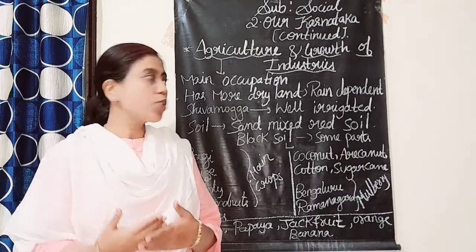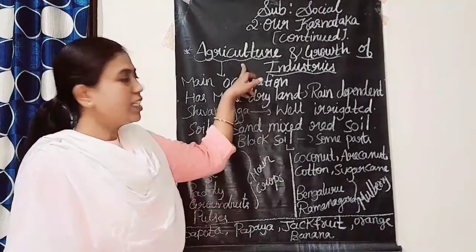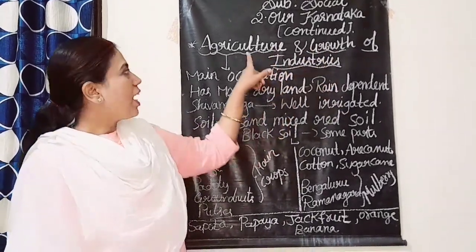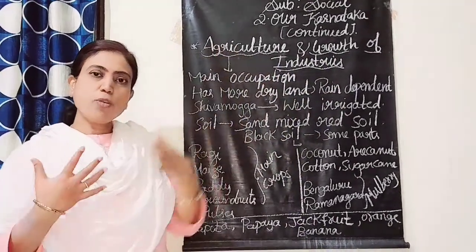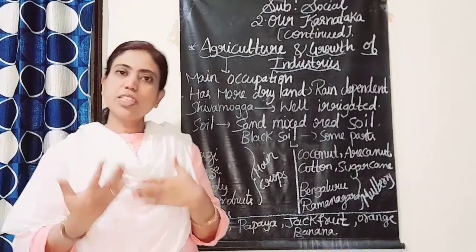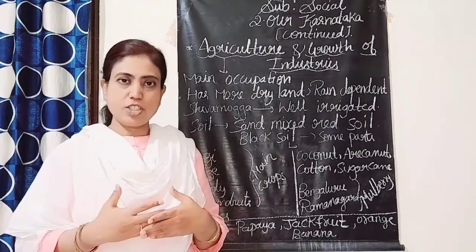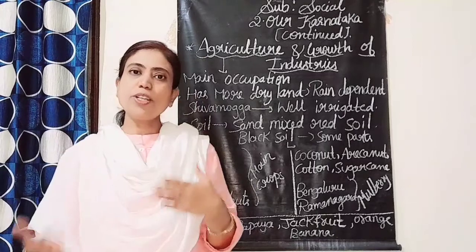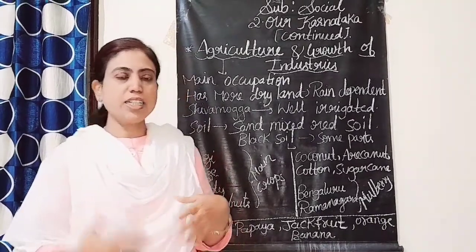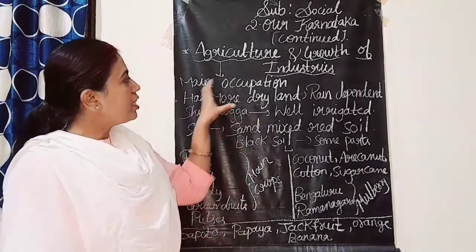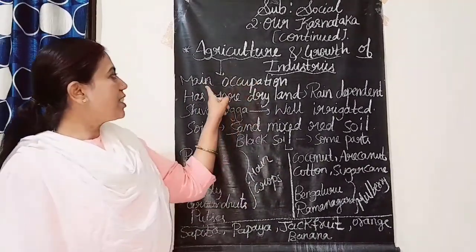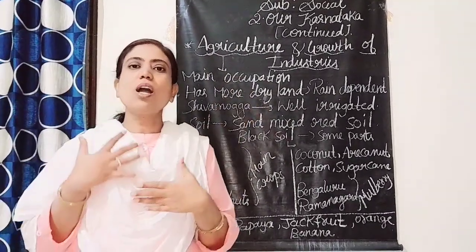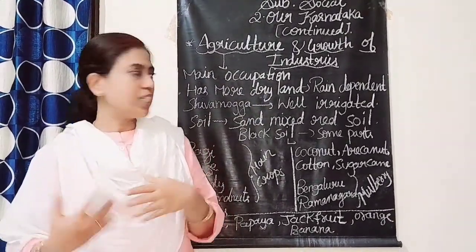We move on to the next topic: agriculture and growth of industries. Agriculture is the main occupation of India and Karnataka. In the Bengaluru division also, agriculture is the main occupation and most of the people are dependent on agriculture.